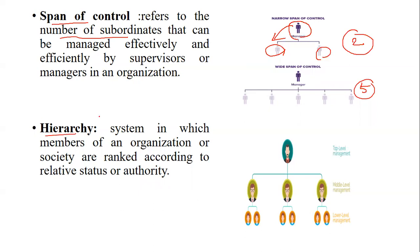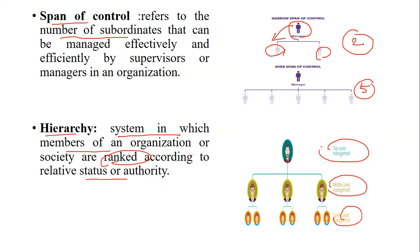The next option is hierarchy. Hierarchy means it is a system in which members of an organization are ranked according to their relative status or authority. In an organization, authority and responsibility are ranked. There is top-level management, middle-level management, and lower-level management. Top-level management holds the highest hierarchy position.